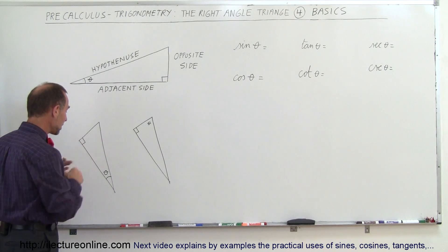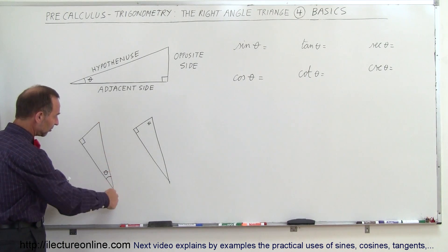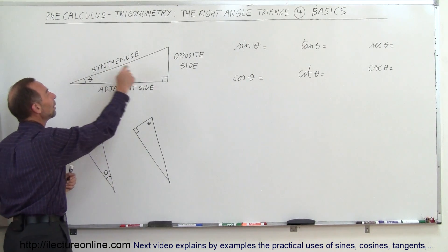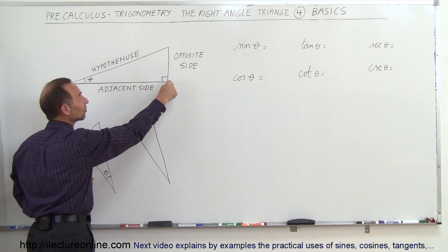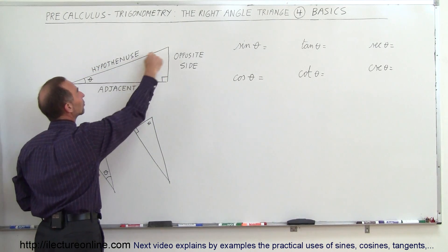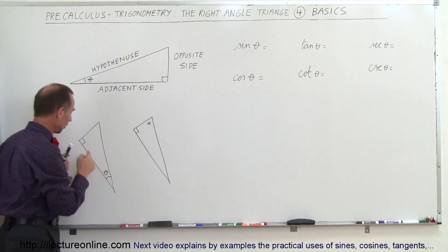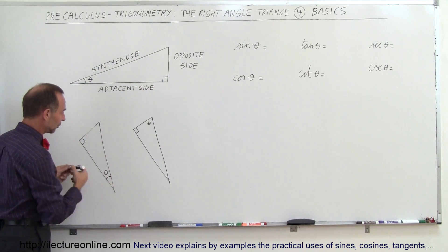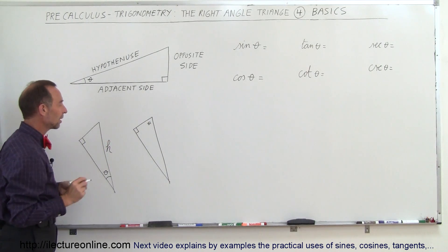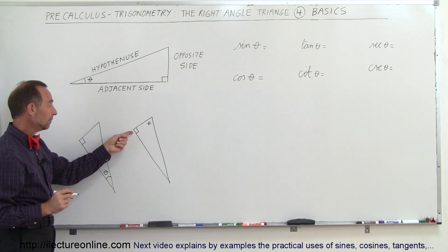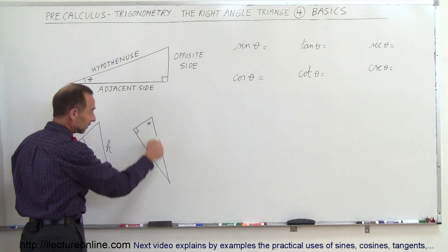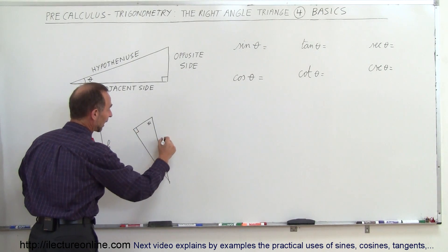Notice that this is the longest side — this is the hypotenuse. The hypotenuse is always across from the right angle. Here's the right angle, and the side directly across from it is called the hypotenuse. So this is the hypotenuse, which I'll label H. In this other triangle, since that's the right angle, this would also have to be the hypotenuse.